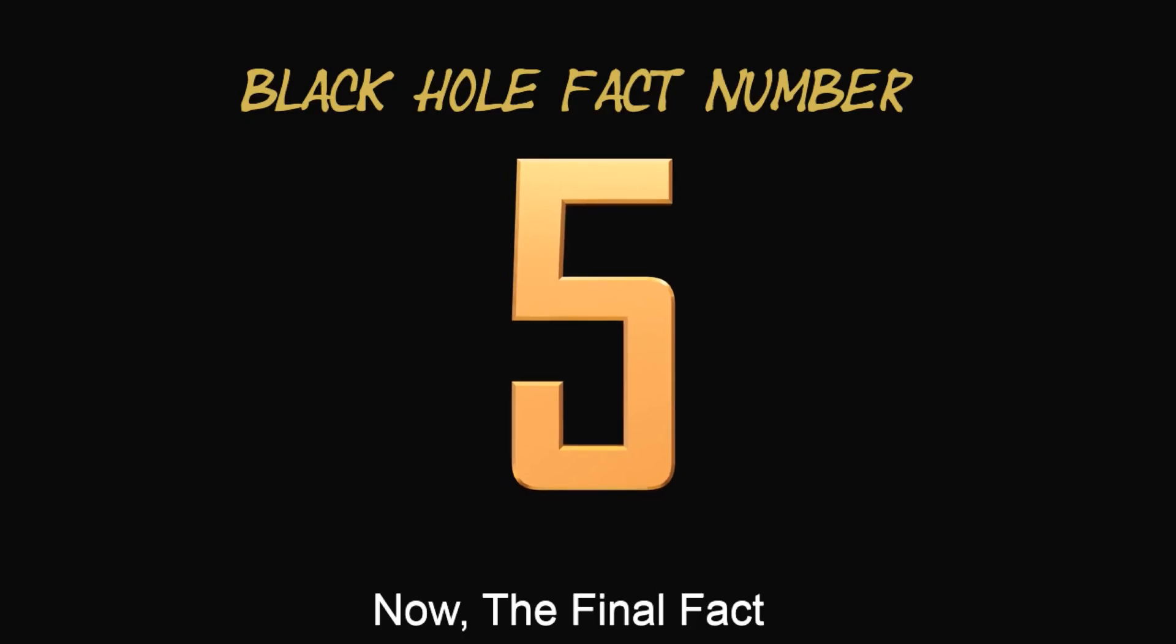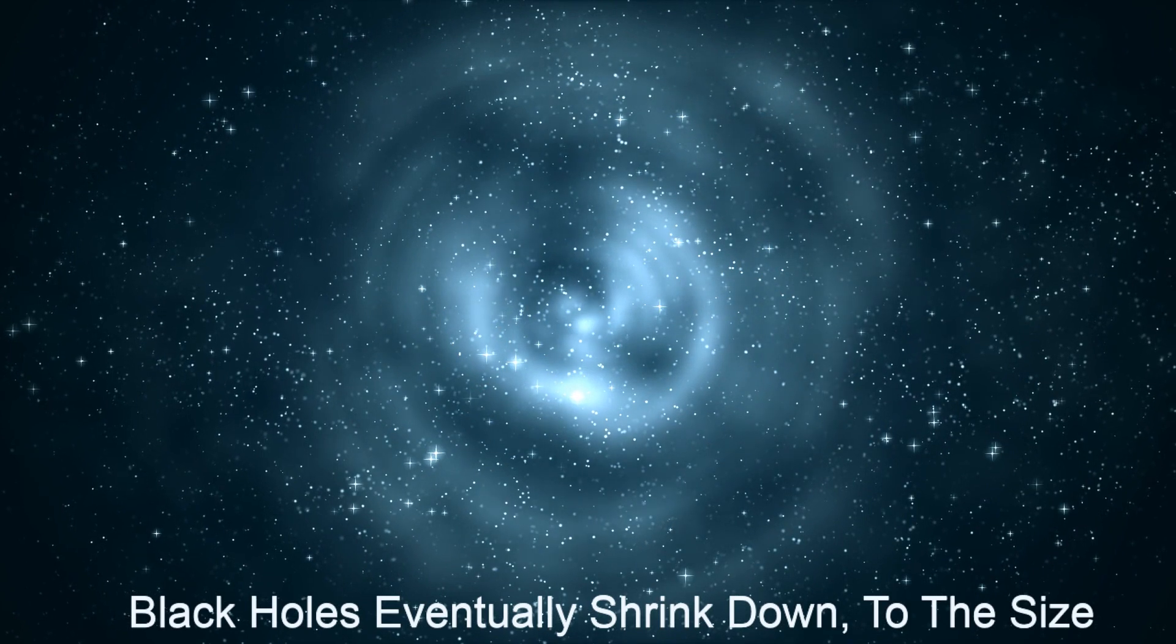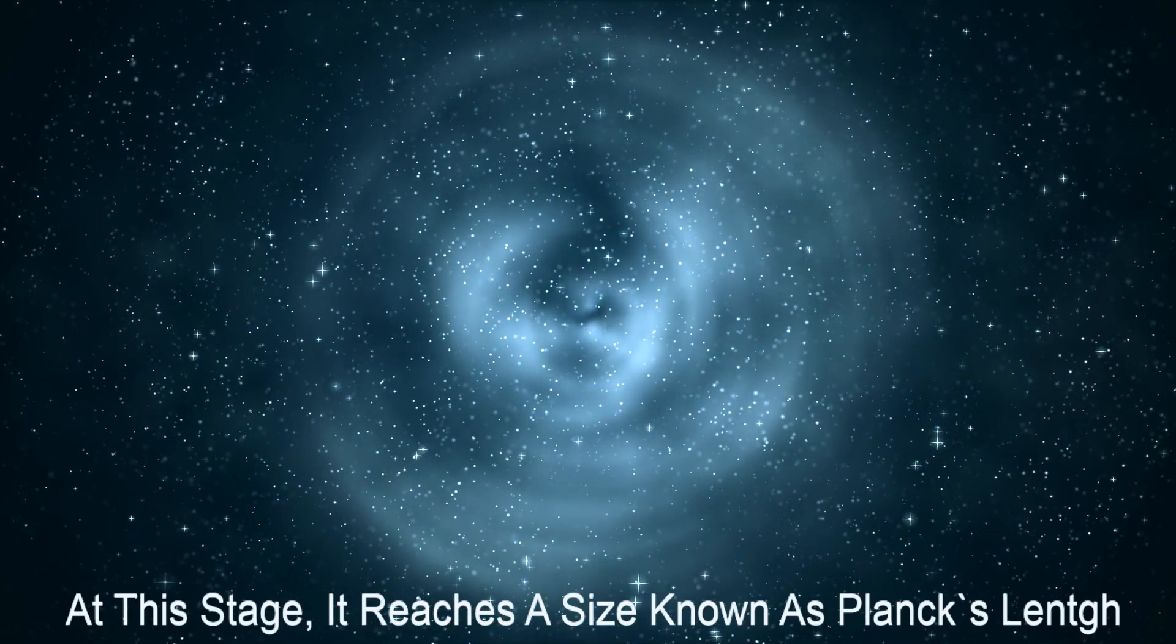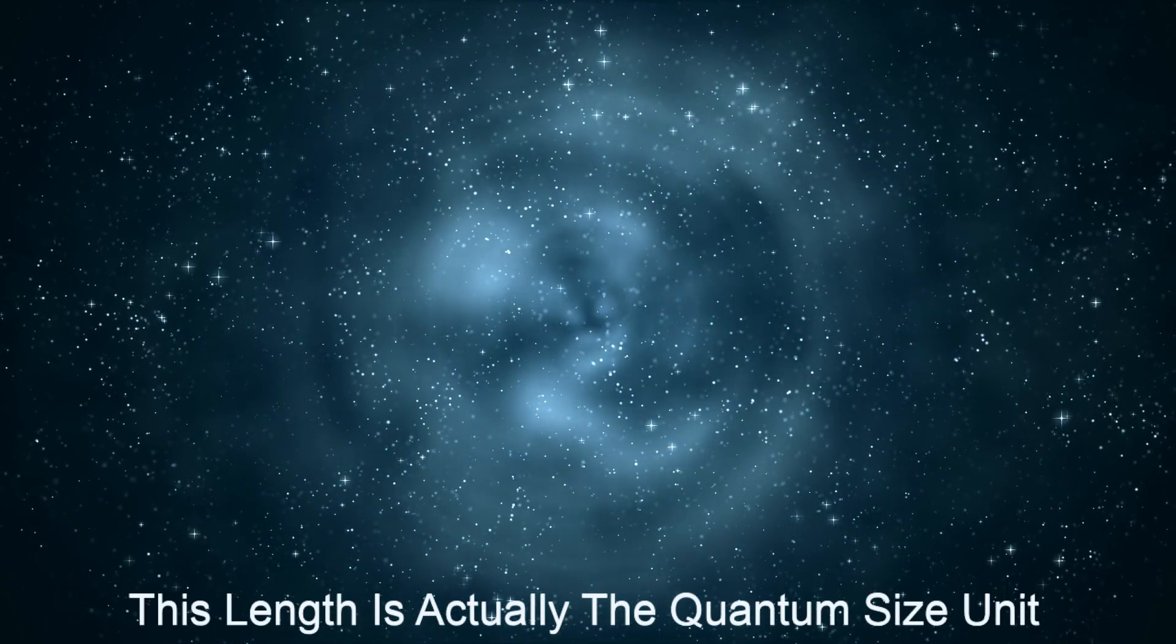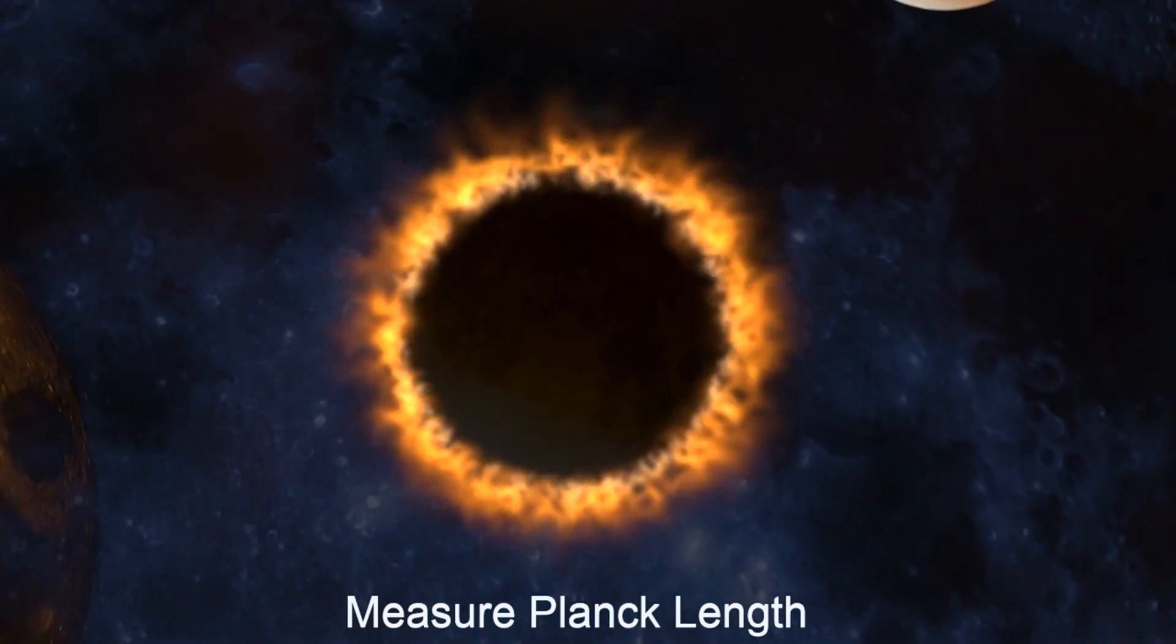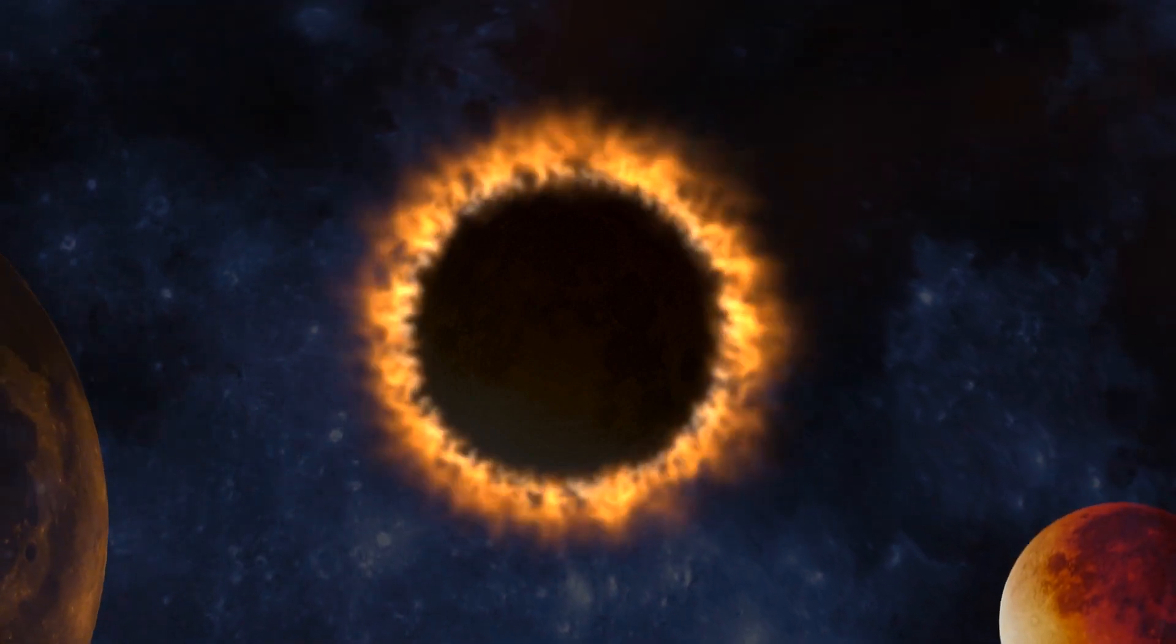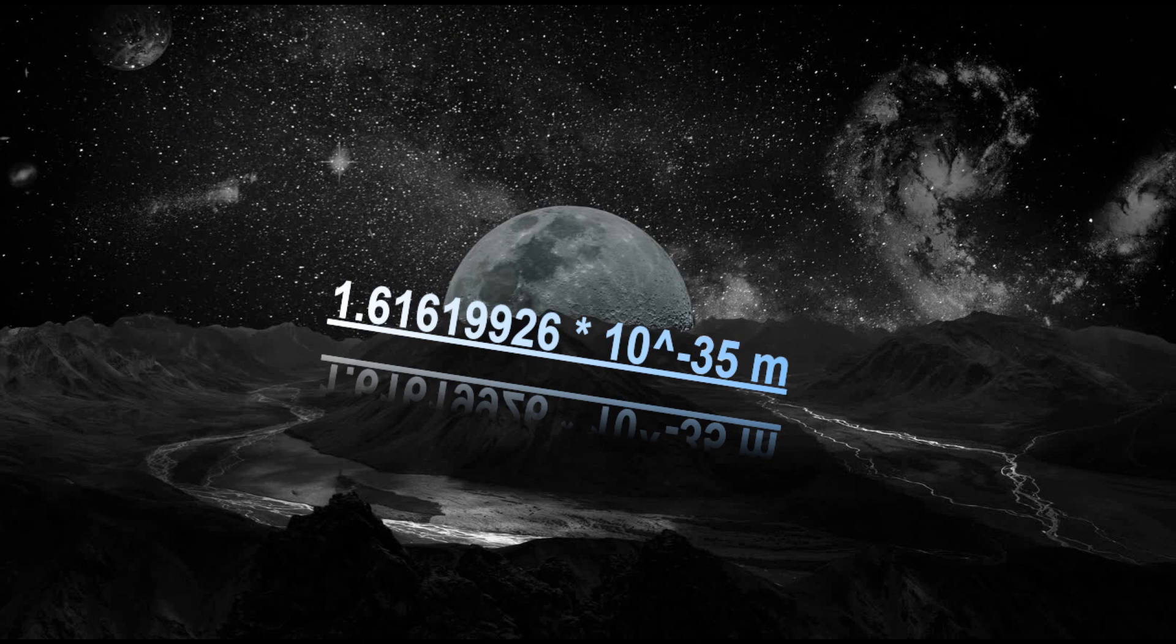Now, the final fact: size of a shrinked black hole. Black holes eventually shrink down to the size smaller than the size of an electron which is a subatomic particle. At this stage, it reaches a size what is known as Planck's length. This length is actually the quantum size limit. Theoretically, nothing can become smaller than this and there is actually no instrument available that can measure Planck length. However, the value of Planck length is 1.61619926 multiplied by 10 to the power minus 35 meters. Now, I understand you didn't get that so I have put subtitles down there and you can just dig the information from there.